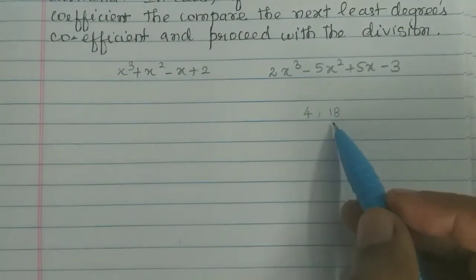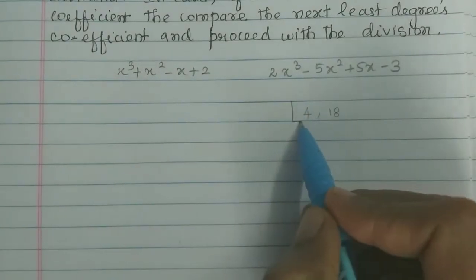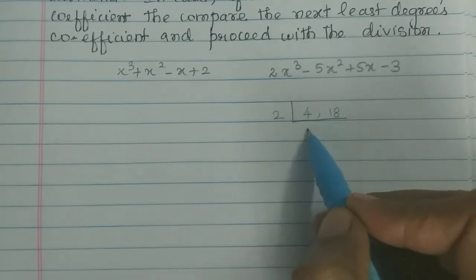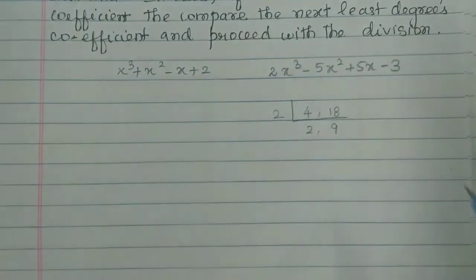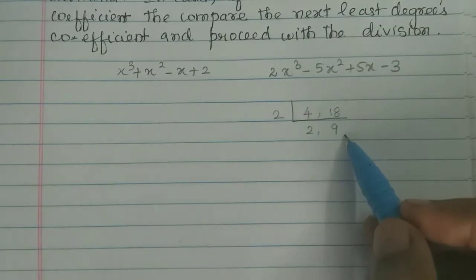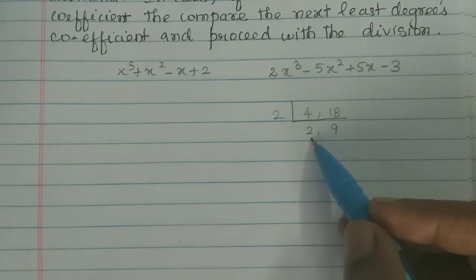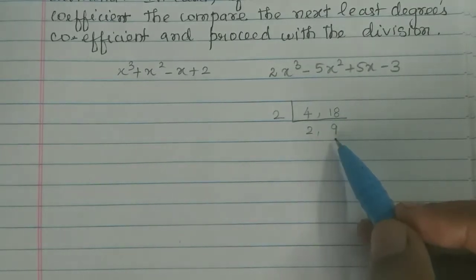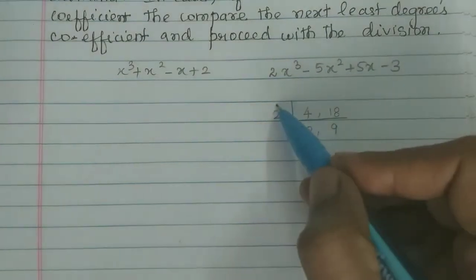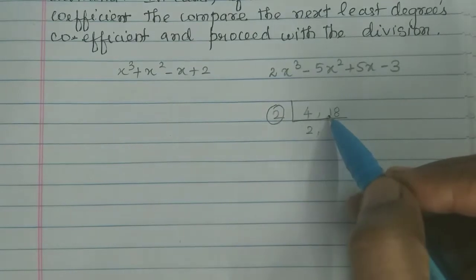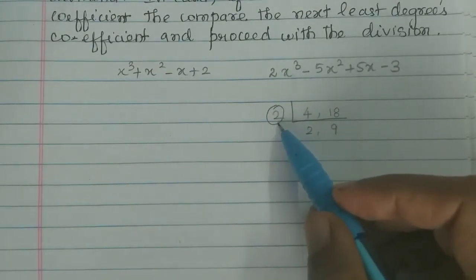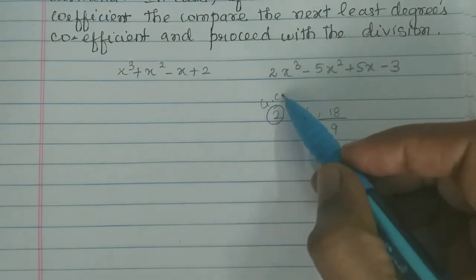Now let's take an example: 4 and 18. In these two numbers, we look at their factors. 2 twos are 4, and 9 twos are 18. Now 2 and 9 share a common factor of 2. So the greatest common divisor — there is only one common divisor here. So this is our GCD.